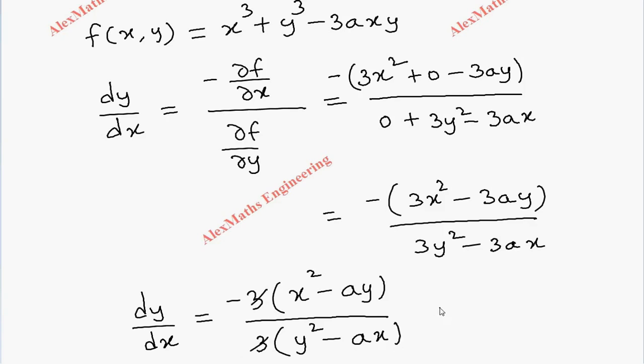So we can cancel these two. So finally we are left with minus of x square minus ay whole divided by y square minus ax.